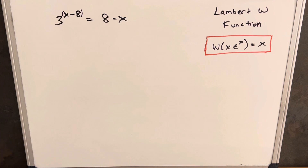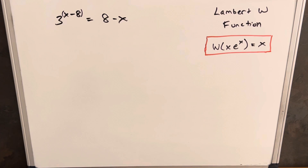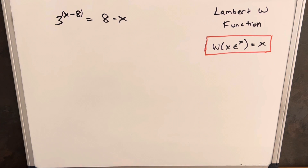We have this problem on the board: 3 to the x minus 8 equals 8 minus x, and I'm going to solve this using the Lambert W function. This will be part of that playlist, so I'm only looking into solving by Lambert W — not looking into any other methods.